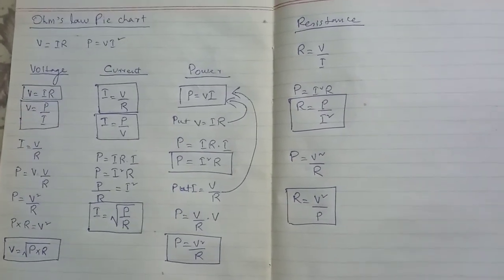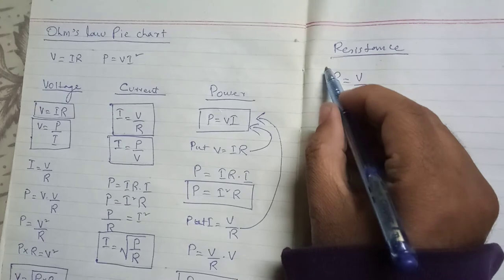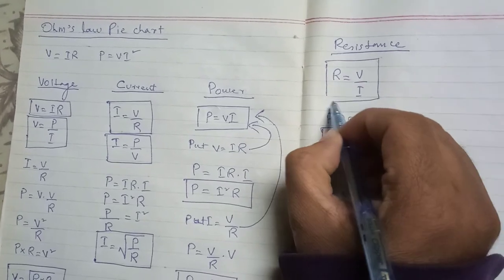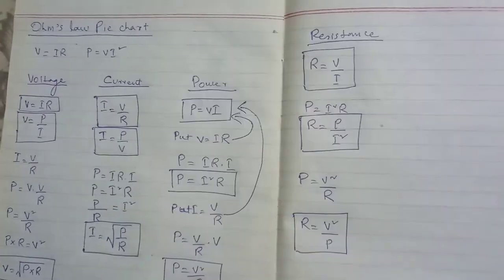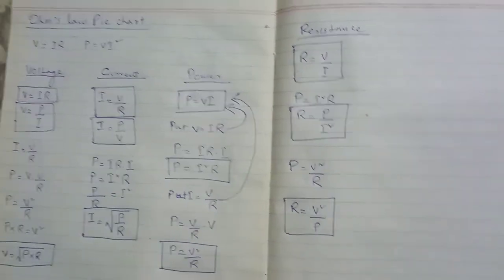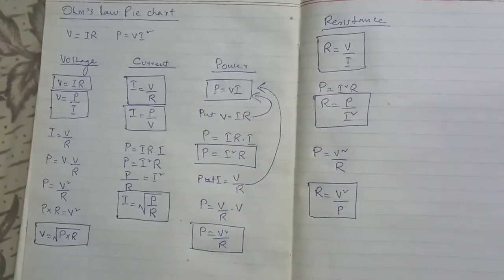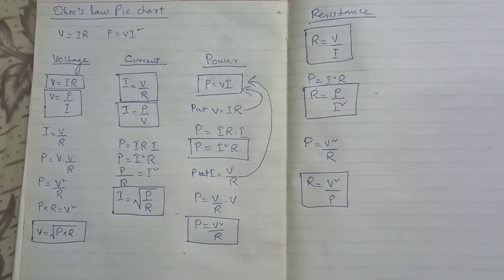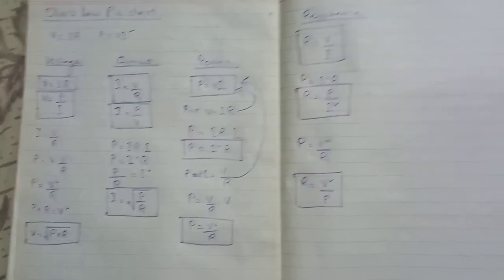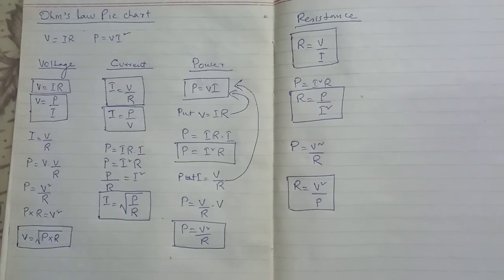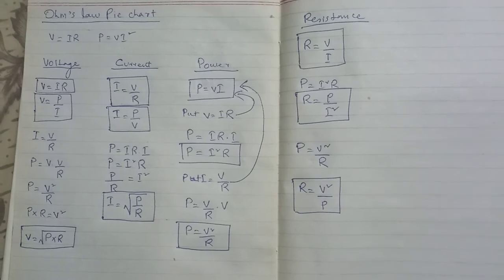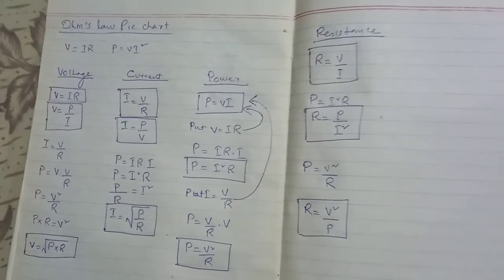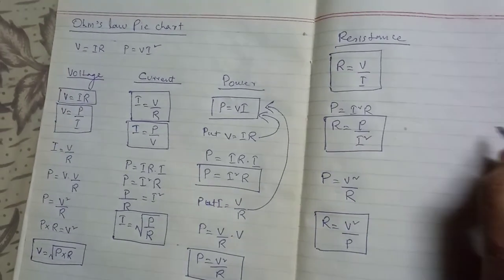So finally we got a total of 12 formulas — three formulas for each: three formulas for voltage, three formulas for current, three formulas for power, and three formulas for resistance. Now make a pie chart, which is called the Ohm's Law pie chart.